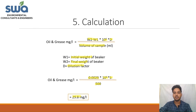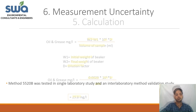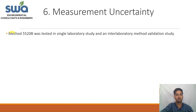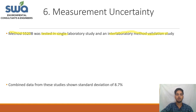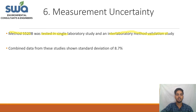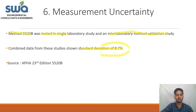Regarding measurement uncertainty: method 5520B was tested in a single laboratory for internal method validation. The combined data showed a standard deviation of 8.7%, so the measurement uncertainty of this process is 8.7%. The source of this information is APHA 23rd Edition, method 5520B.